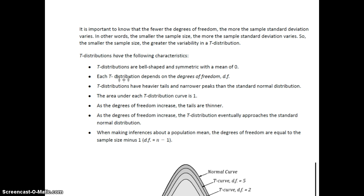Now, here are some interesting things about the t-distribution. It's bell-shaped and symmetric, just like a normal curve with a mean of zero. But the t-distribution depends on the degrees of freedom. We haven't had this in the past. Now, t-distributions have heavier tails and narrower peaks than the standard normal distribution. The area under each t-distribution curve is one, just like it was under the normal curve.